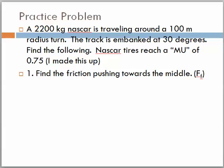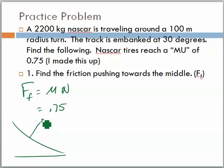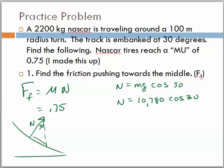This problem here says find the friction pushing toward the middle. It's the same problem except now I'm trying to find out how much friction is pushing the car towards the middle. The force of friction is mu times n. So, I know this is going to be 0.75 and I have to find n. On our triangle, n is that direction. And we've learned that n is equal to, because it's on the adjacent side, the mg cosine of theta, or in this case, 30 degrees. So, n is, and we found mg earlier, mg on the last problem was 10,780 times the cosine of 30 degrees. So, in this case, the normal turns out to be 9,336 newtons.